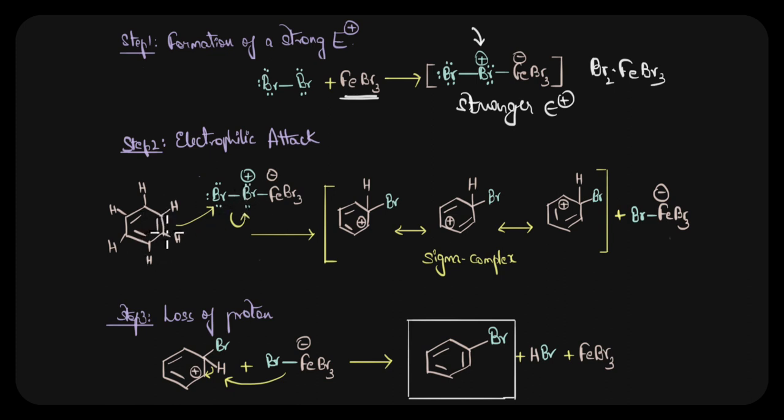Now in the next step where the electrophilic attack by benzene takes place, the pi electrons of the benzene attack this bromine and form sigma complex as you can see here. Remember, this formation of the sigma complex is the rate limiting step. This step is strongly endothermic because it forms a non-aromatic carbocation.